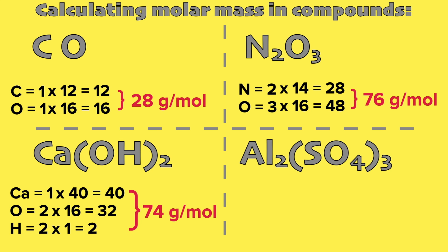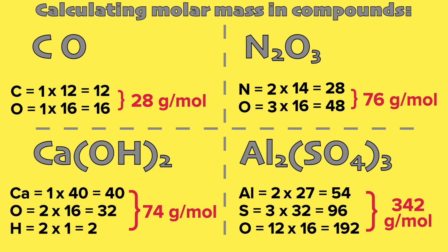In the last example, we have two aluminum, three sulfur, and 12 oxygen atoms. Like what we did earlier, we multiply those values to the molar masses of each element. We add the final values and we will get 342 grams per mole as the molar mass of the whole compound.